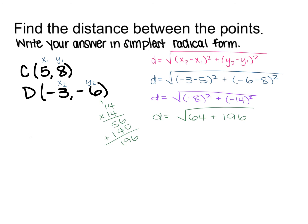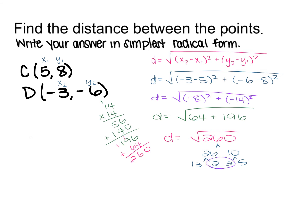From here, add 64 with 196 to get the square root of 260. Breaking down 260: 260 = 4 × 65, where 65 = 5 × 13. The two 2's group up, giving a distance of 2 times the square root of 65.